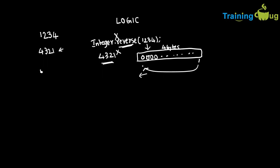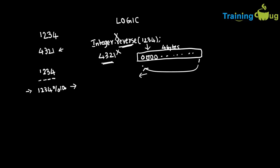If I take my number as 1234, I need to get 4321. The actual logic is: I need to get each and every digit in reverse order. In the first iteration, I need to get 4. How do you get 4? We know that if you perform modulo 10 on any number, it gives you the last digit as the remainder. So 1234 % 10 gives remainder 4. This is the way you get each digit.